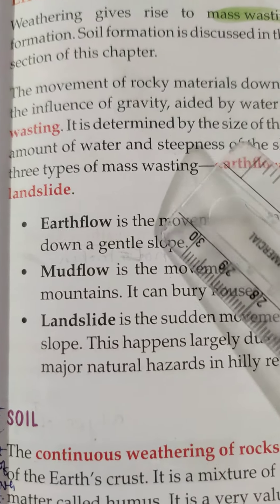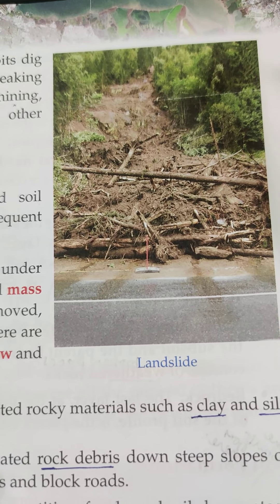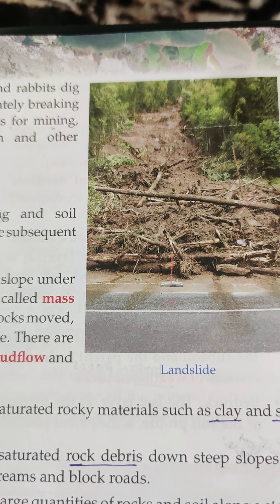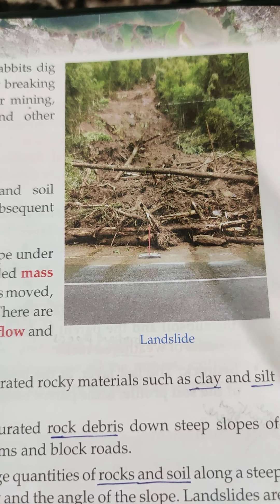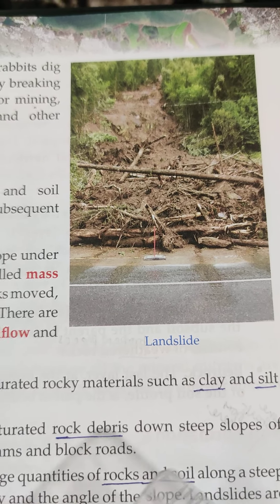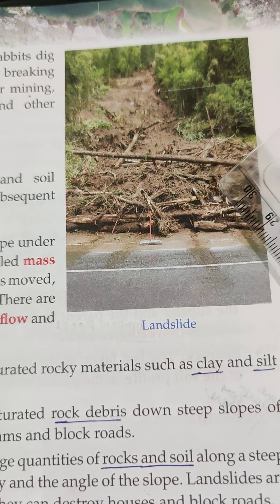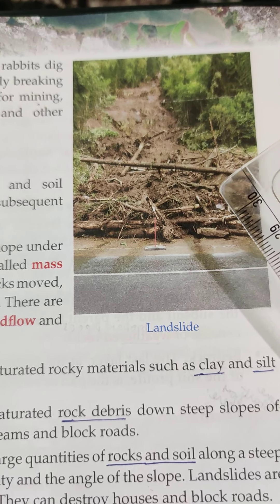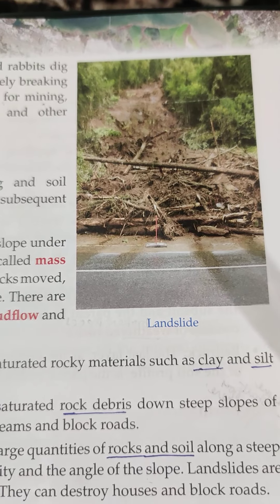There are three effects of weathering: earth flow, mud flow, and landslide. Earth flow is the movement of water-saturated rocky material like clay and silt down a gentle slope. Mud flow is the movement of water-saturated rock debris down a steep slope. Landslide is the sudden movement of large quantities of rocks and soil along a steep slope, which happens largely due to gravity and the angle of the slope. Landslides are major natural hazards in hilly regions.